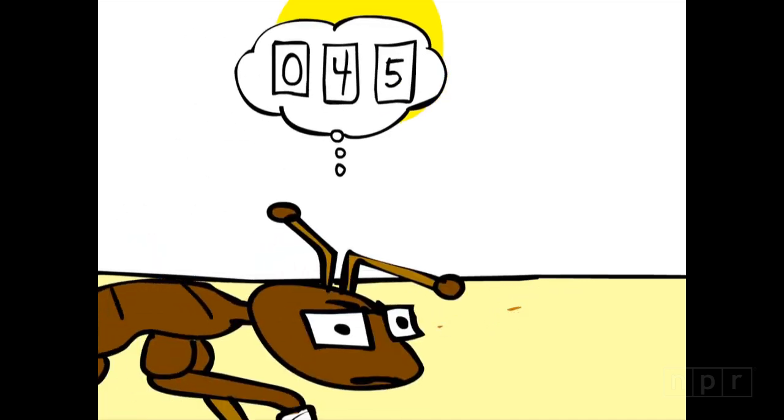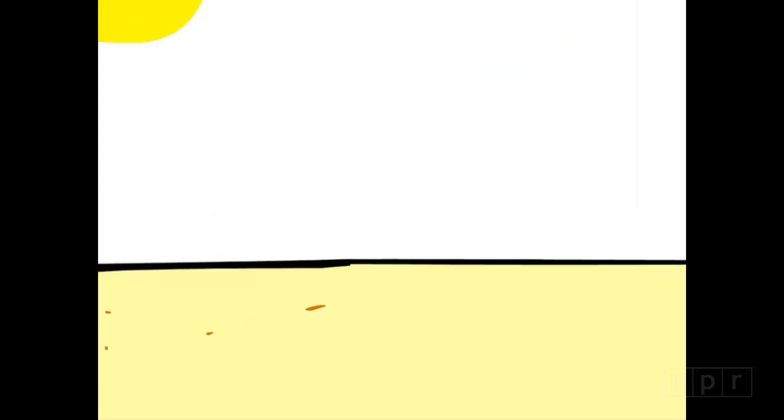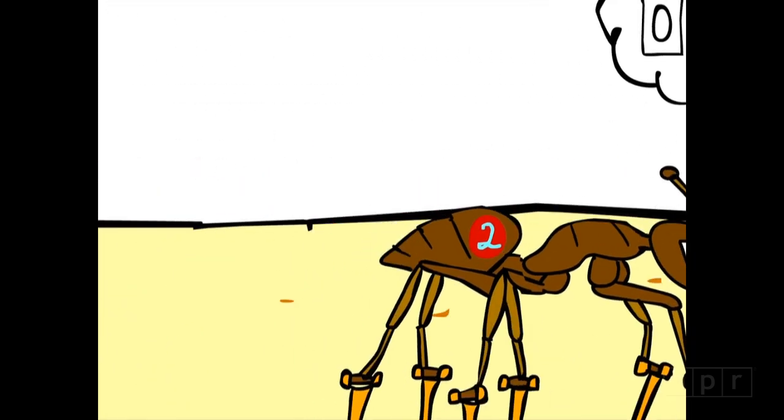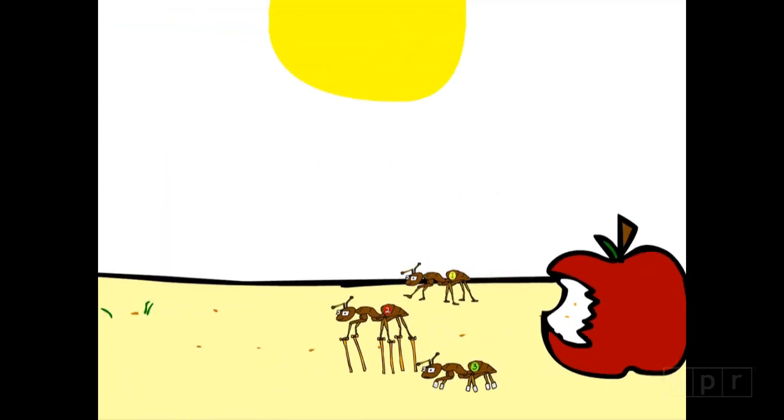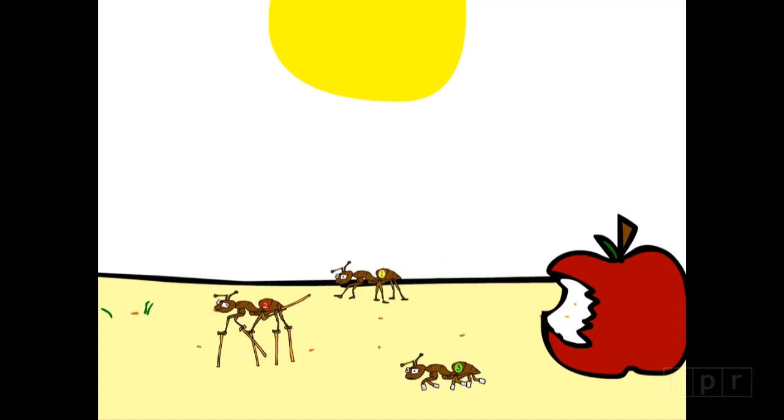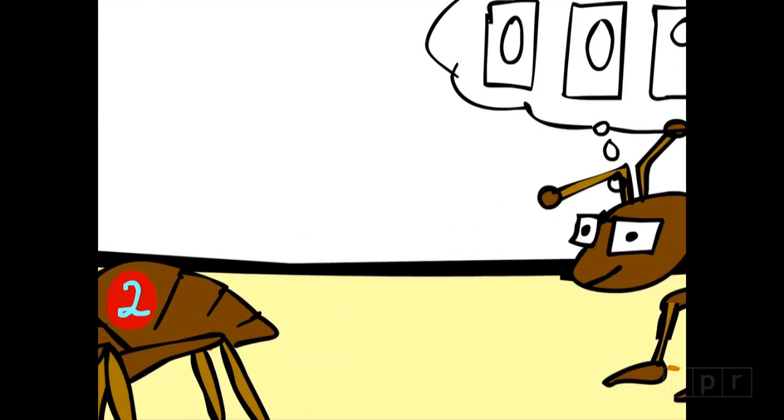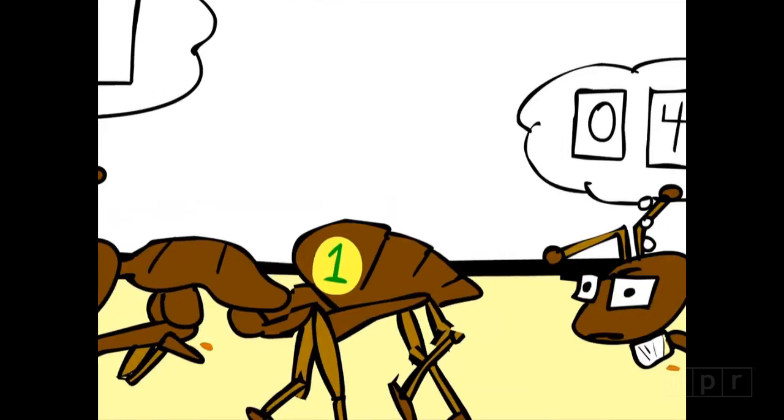The stumpies took lots of steps. The stilties took fewer steps. The regulars took regular steps. And when it was time to come home, all the ants, all three groups, went straight home. Their pedometers apparently had adjusted to their new leg size.